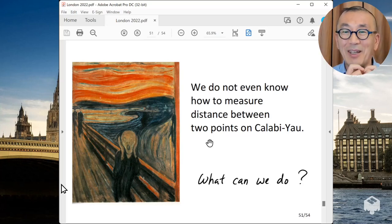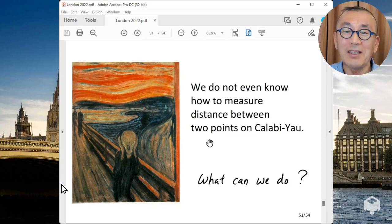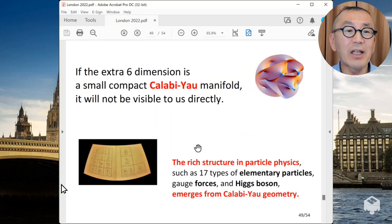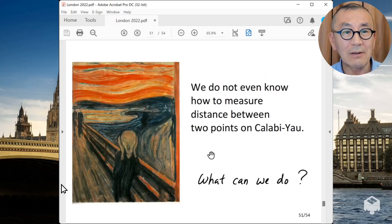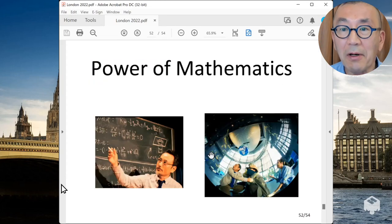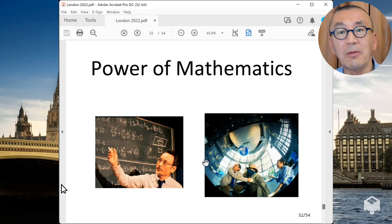But we need to develop this mathematical theory much more because we don't even know how to measure the distance between two points of Calabi-Yau manifold. So if we don't know how to measure the distance mathematically, how can we derive such rich structure out of it? So we are struggling. And we need more power for mathematics. And so in the movie, we also demonstrate the power of mathematics in deciphering the universe.